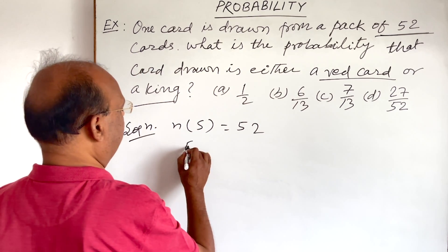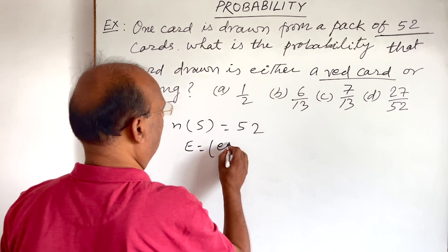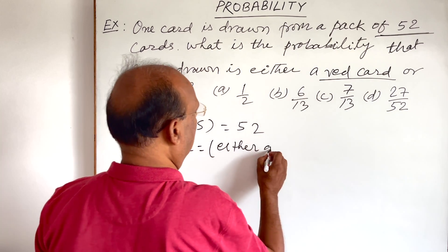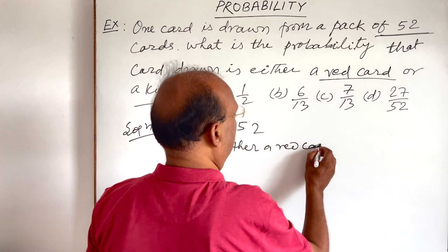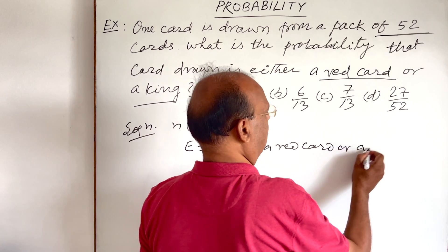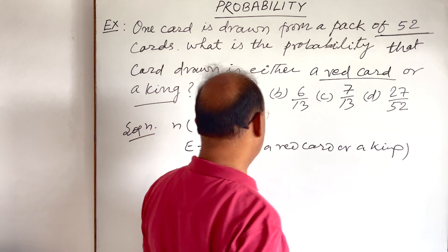So 26 plus 2 means 28. That will be the number of elements in the event. So in this case, our event is either a red card or a king.